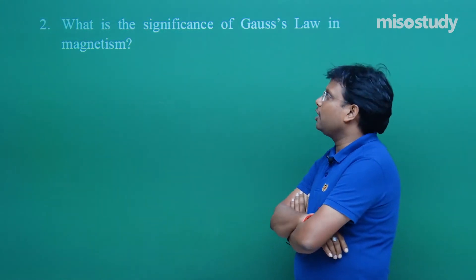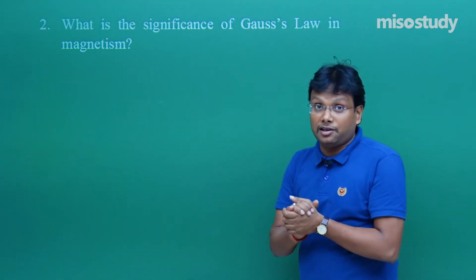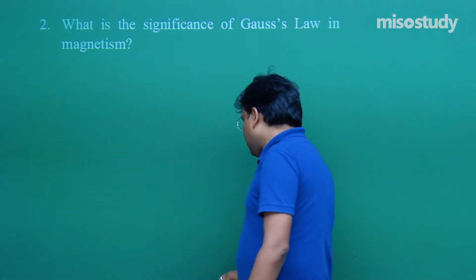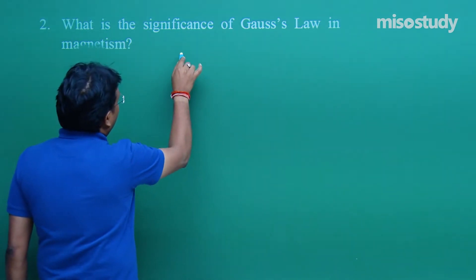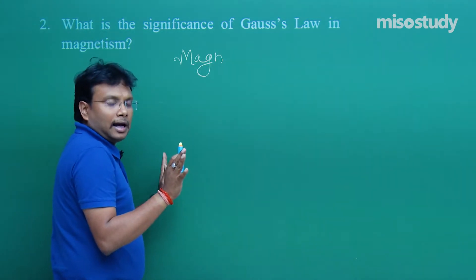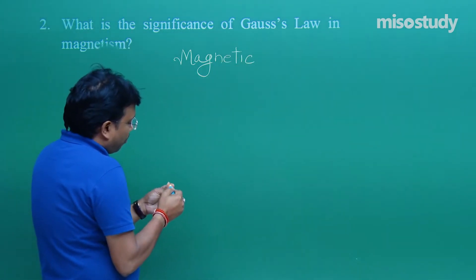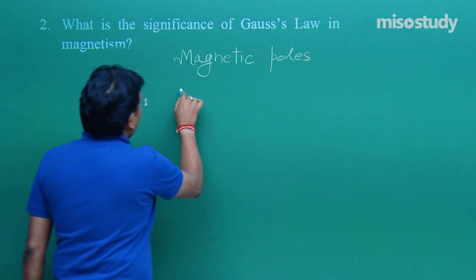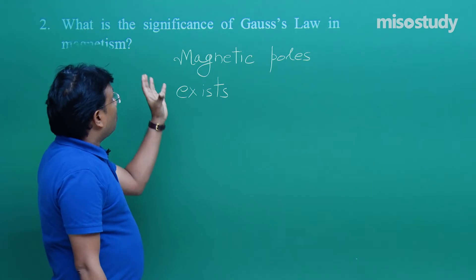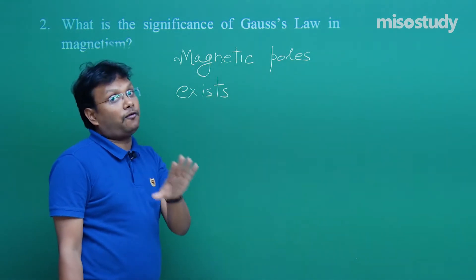Gauss law in electricity was discussed earlier, and Gauss law in magnetism is elaborated in this chapter. For one mark, you need to mention the significance and importance of Gauss law in terms of magnetic aspects. I will write down one simple statement that captures exactly what the significance of Gauss law in magnetism is.